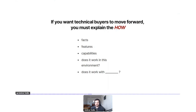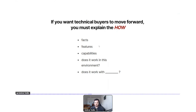If you want technical buyers to move forward with your purchase process, you must explain the how. This audience wants facts, features, capabilities — they have specific questions like 'does it work in this type of environment?' If you aren't answering these questions somewhere on your website, people will refuse to get on a demo. They have certain must-haves and have to check the box before they're willing to spend time on a demo call.